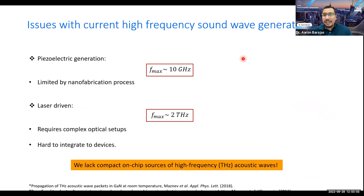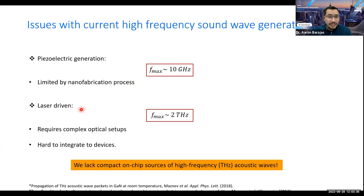What are the issues with the current ways to generate high-frequency sound? For piezoelectric generation, maximum frequencies are around tens of gigahertz, limited by nanofabrication processes because it is very hard to define features smaller than 100 nanometers. For laser-driven methods, we can reach very high frequencies of up to two terahertz, but these require very complex optical setups that are also hard to integrate into compact devices.